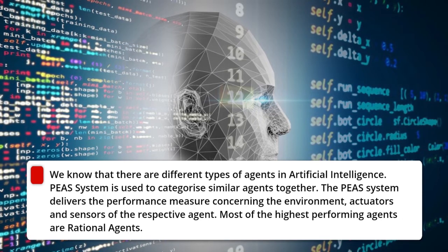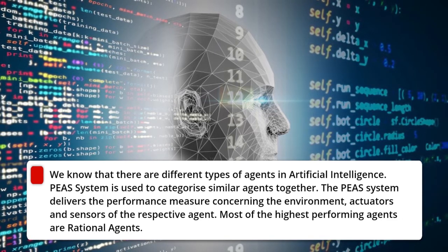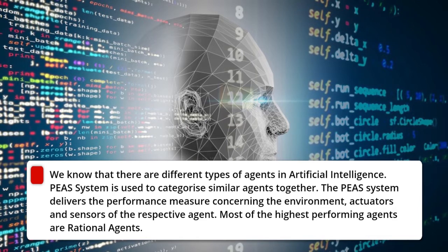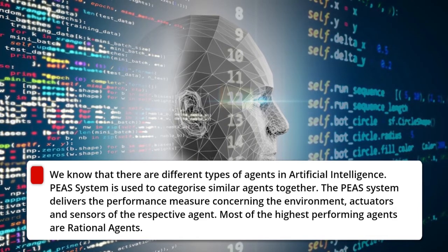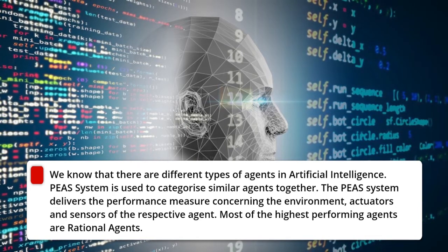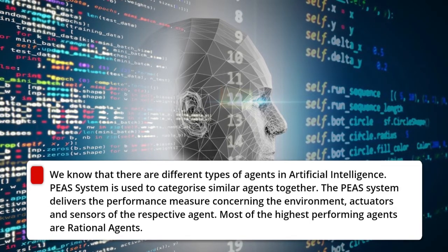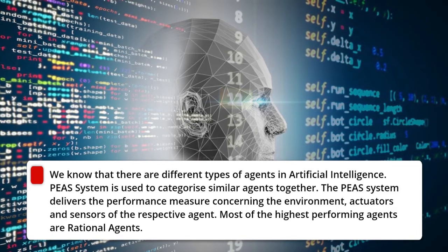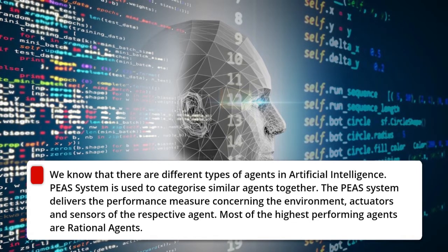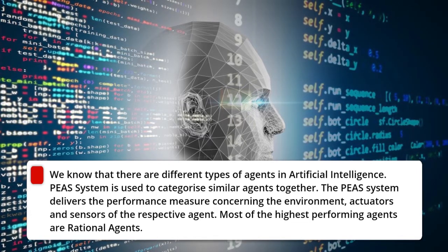We know that there are different types of agents in artificial intelligence. The PEAS system is used to categorize similar agents together. The PEAS system delivers the performance measure concerning the environment, actuators, and sensors of the respective agent. Most of the highest performing agents are rational agents.